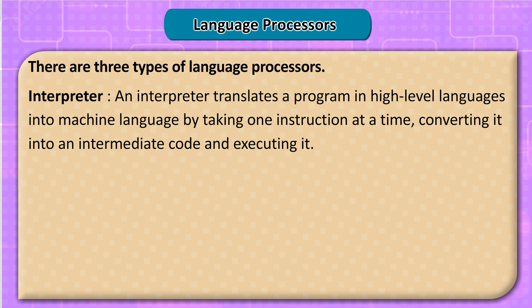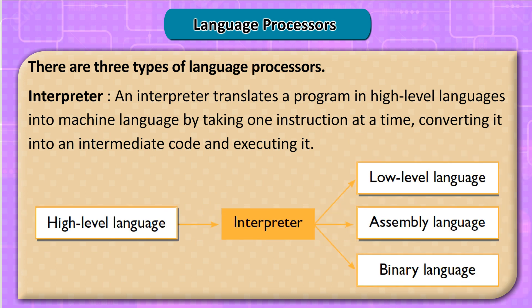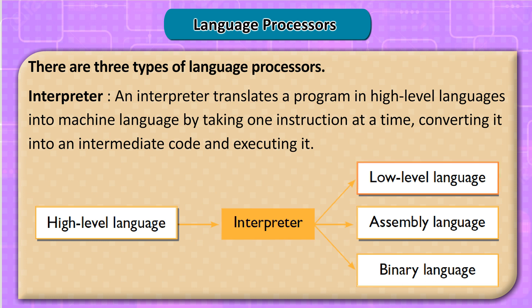Interpreter: An interpreter translates a program in high-level language into machine language by taking one instruction at a time, converting it into an intermediate code, and executing it. The flow is: High-level language → Interpreter → Low-level language / Assembly language → Binary language.